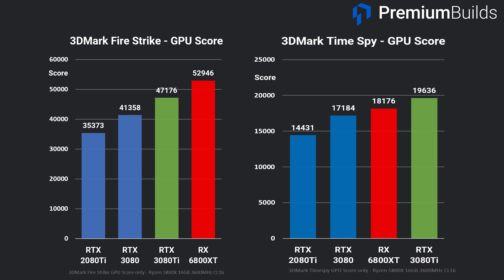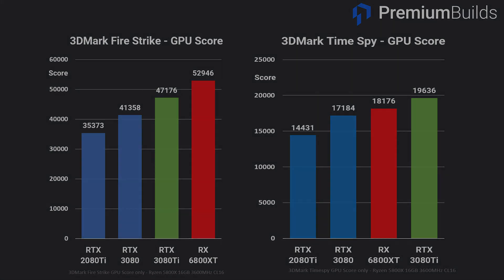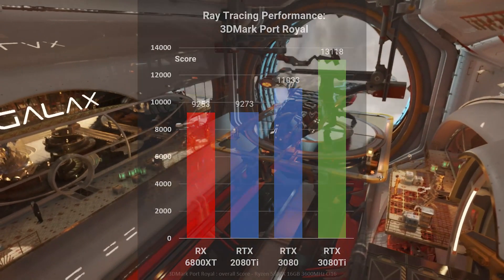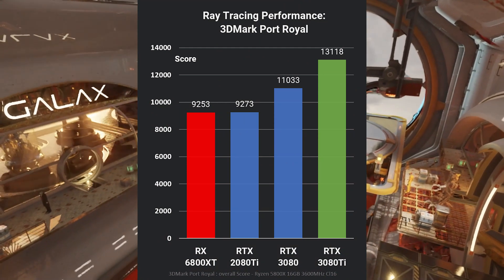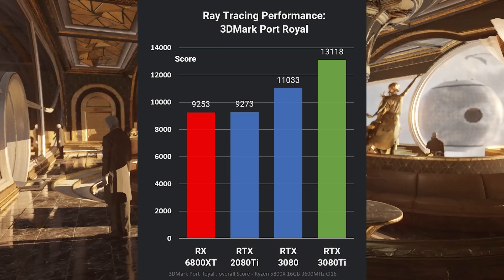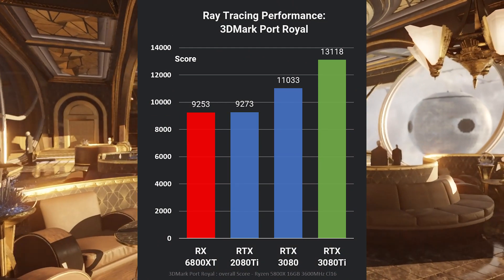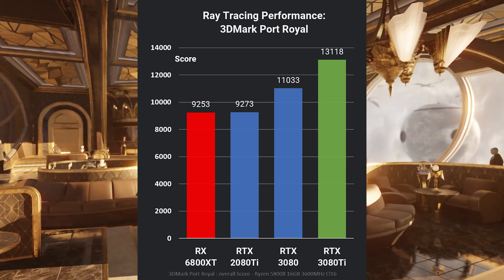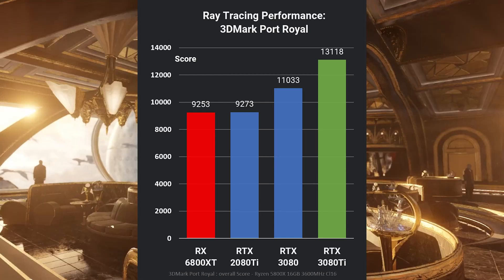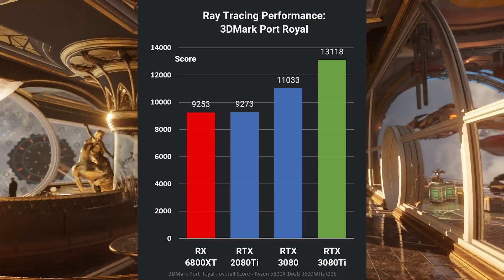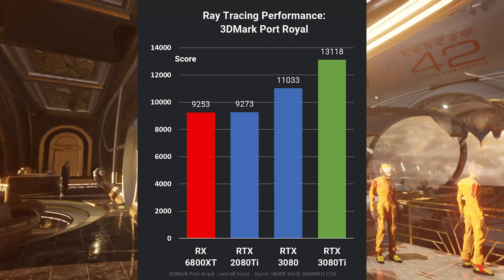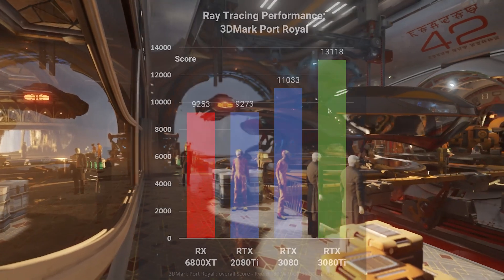In Timespy it's 1,500 points ahead of the AMD card and 2,500 points ahead of the RTX 3080, with over 5,000 points lead above the RTX 2080 Ti. To test ray tracing we can take a quick look at the scores in Port Royal. Here the RTX 3080 Ti uses its 12 ray tracing core advantage to romp home 2,000 points above the RTX 3080 and 4,000 points ahead of both the RTX 2080 Ti and the RX 6800 XT. It's the clear winner in this test, but with more RT cores and the NVIDIA next generation cores this is what you'd expect.